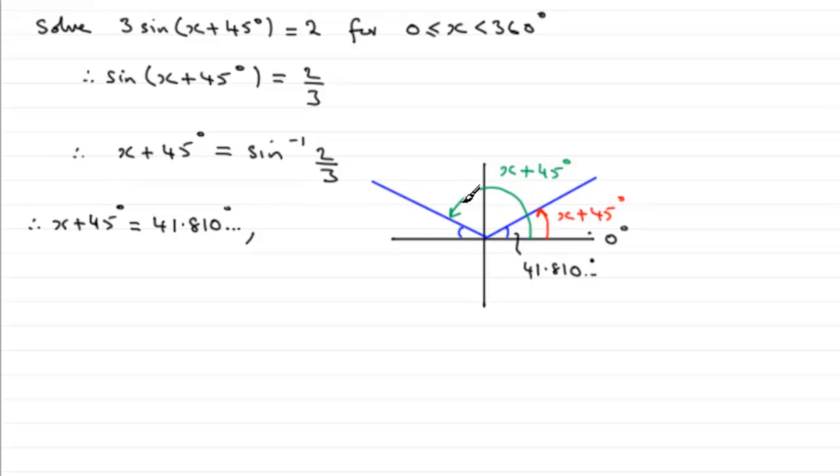So to get the green x + 45°, all you got to do is 180 degrees minus the blue angle here, 41.810 degrees. And if you do that, 180 minus 41.810, you get 138.189 and so on degrees.